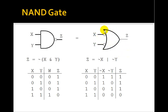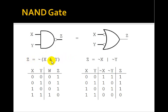We can make a NAND gate by drawing an OR gate and putting two bubbles on the inputs. Which means that the logic equation Z = NOT(X AND Y) must be equal to Z = NOT X OR NOT Y.